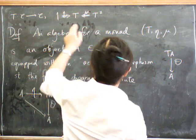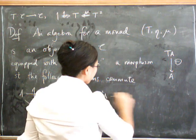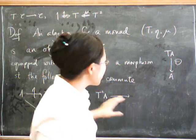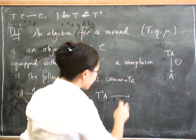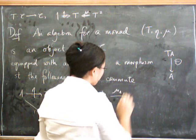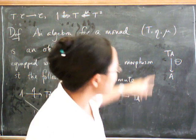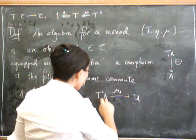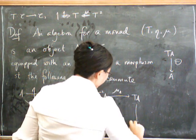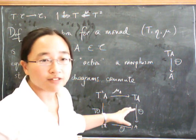The other thing you can do is some mu stuff. If you start with T squared of A, there are two things you can do. One of them is you can do mu at A, and that takes you down to T of A. But the other thing you can do is T of theta, because T of theta is also going to take you down to T of A. And then there isn't very much you can do — you just have to do theta to get yourself down to A — and the point is that those two things have to be the same.